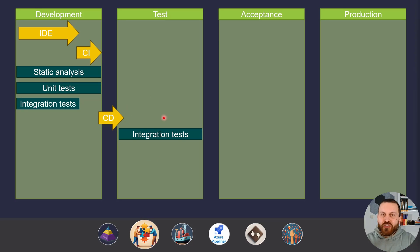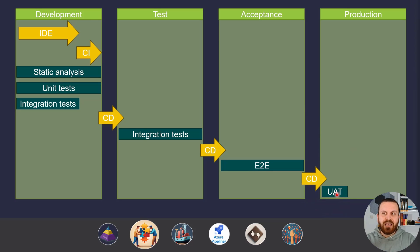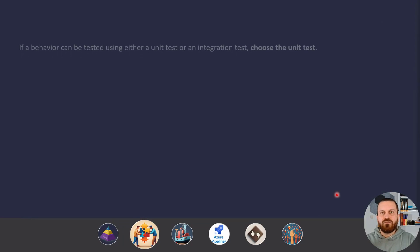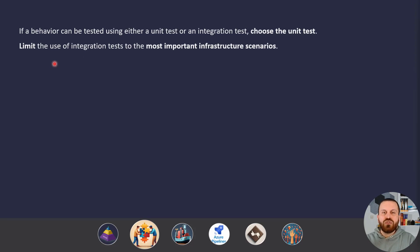After everything is green and all your tests pass on the test environment, you push your code using the CD pipeline to the acceptance environment. In the acceptance environment, you usually run end-to-end tests. We have two approaches: run the user acceptance test on acceptance and then swap the environments, or push the code to production and run the user acceptance tests there. But you should be careful when writing integration tests — if you can test a behavior using both integration tests and unit tests, you should choose the unit test and limit the usage of integration tests to the most important scenarios.